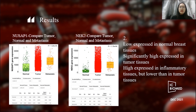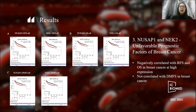In the analysis of the expression of NASAP1 and NASAP2 in normal, inflammatory, and tumor tissues of breast, it was shown that there were low expressions in normal tissues, significantly high expression in tumor tissues, and equally high expression in inflammatory tissues, but lower than tumor tissues.